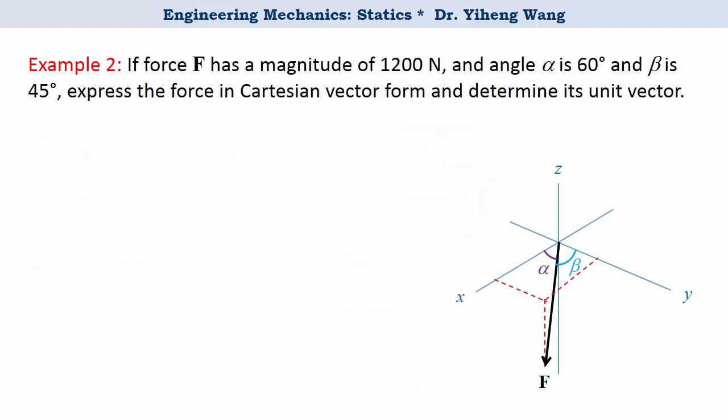In this example, a force with the magnitude of 1,200 newton is shown in the x, y, z coordinate system. And we are also given two of its direction angles. Angle alpha is 60 degrees and beta is 45 degrees. We need to express this force in Cartesian vector form and also determine its unit vector.